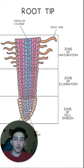And so as you can see, this root tip consists of three zones: the zone of division, the zone of elongation, and the zone of maturation.